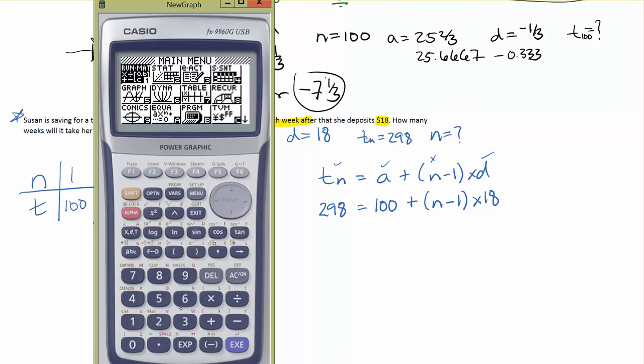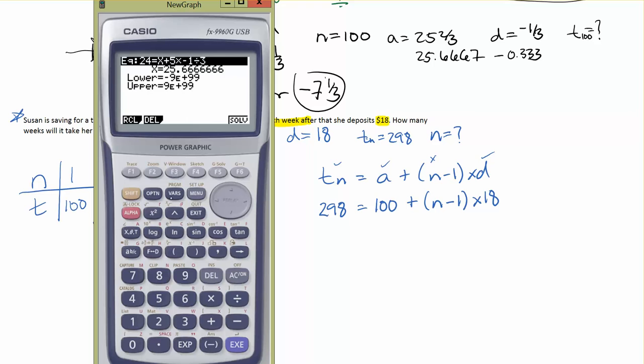So if we go in here, type in what we see: 298 is equal to 100 plus bracket X minus 1, bracket times 18.